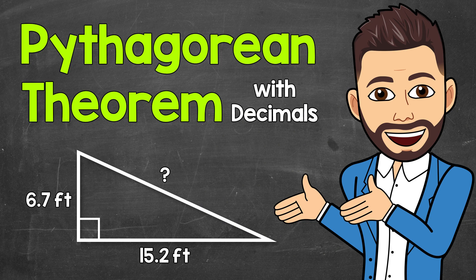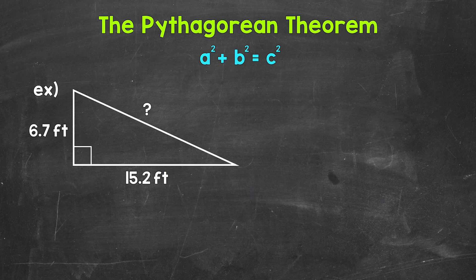Welcome to Math with Mr. J. In this video, I'm going to cover how to find an unknown or missing side length of a right triangle using the Pythagorean theorem, and we're going to be working with decimal side lengths. We will start with an example where we need to find the length of the hypotenuse, and then we will move on to an example where we need to find the length of a missing leg.